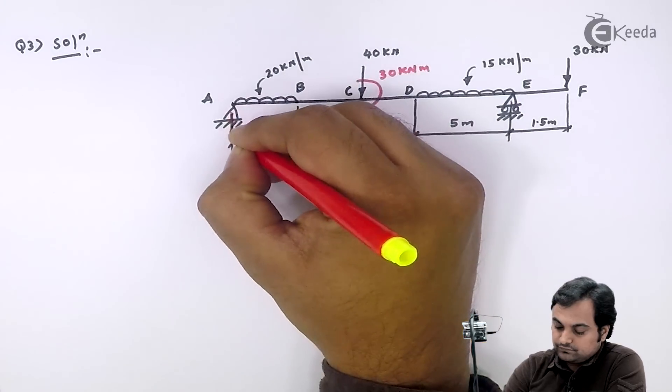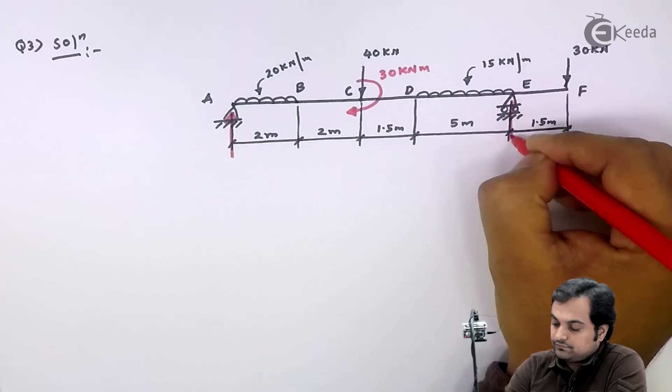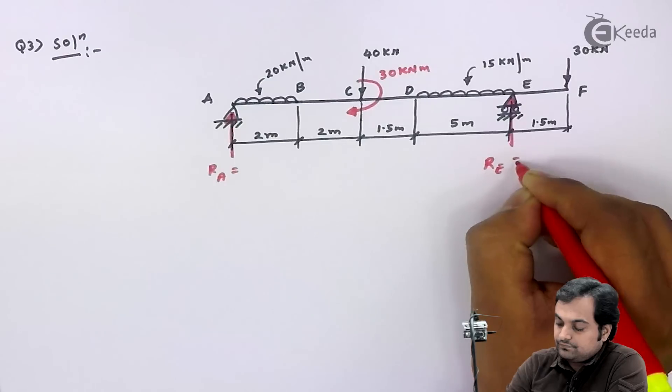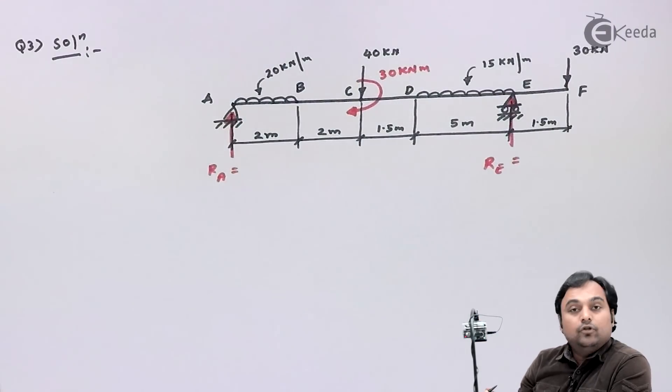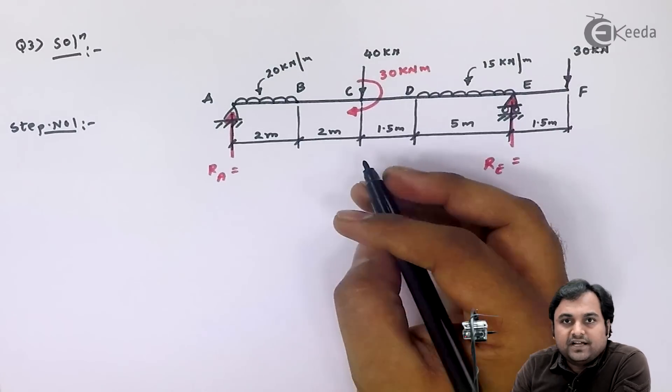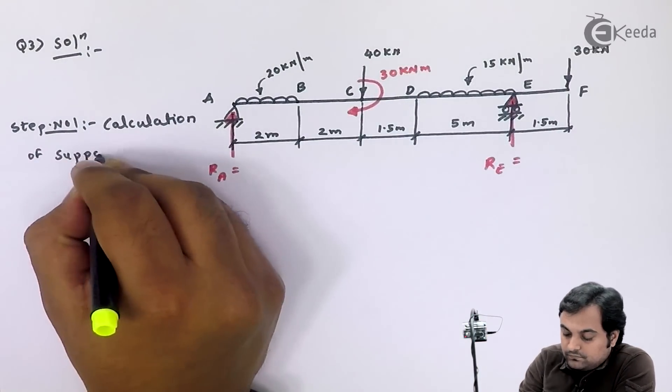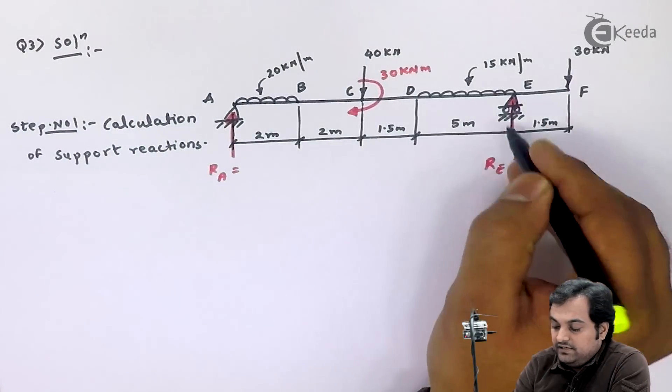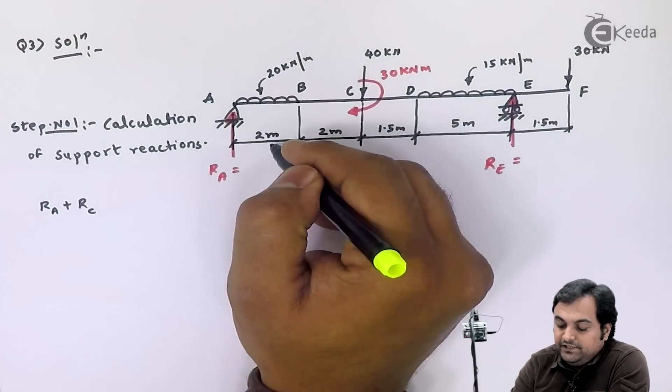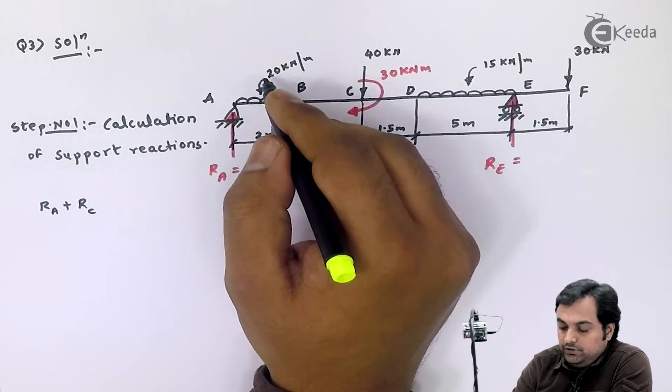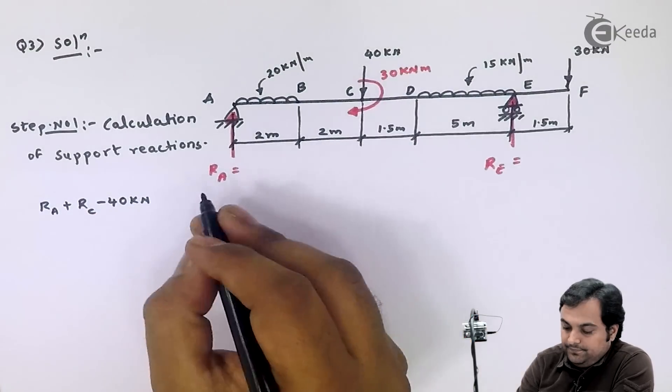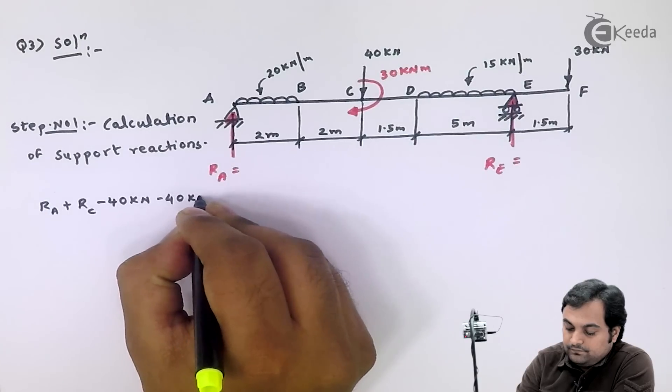There will be reactions at A and reaction at E. My first step is step number one: calculation of support reactions. Here I have RA and RE as upward. RA plus RE: 20 into 2, that's the UDL into point load, so minus 40 kilonewton, again minus 40.